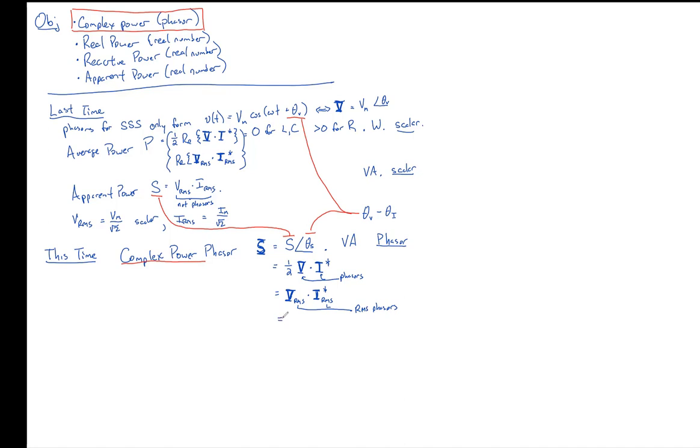And then lastly, this is the first time every other phasor we've either drawn in rectangular coordinates or we've preferred to be either in rectangular or in polar coordinates. What you found is that impedances we prefer in rectangular coordinates and voltages and currents we prefer in polar coordinates. Complex power phasor means something when it's written in both polar coordinates. It's up here, but also it means something if you write it in rectangular coordinates.